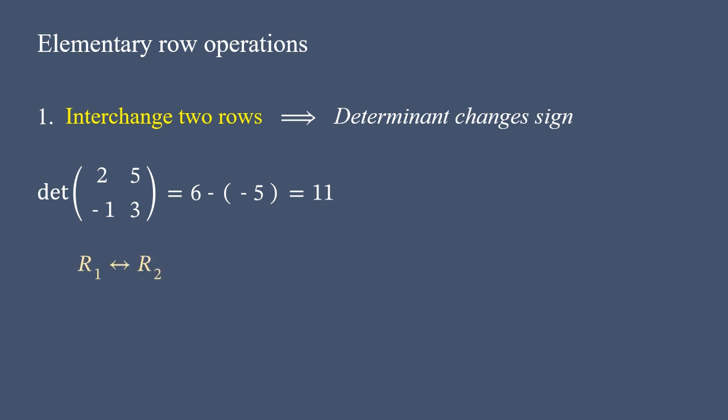Now we interchange two rows. Again, let's evaluate the determinant of the matrix resulted after the interchange of two rows. In this case, we get negative 5 minus 6, so that comes out to negative 11.